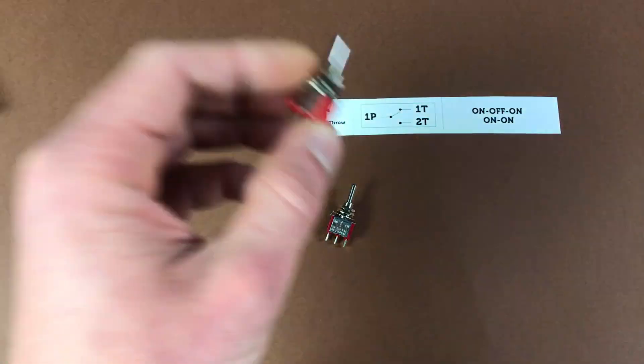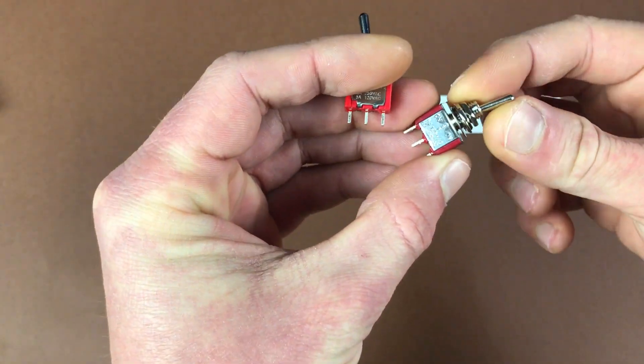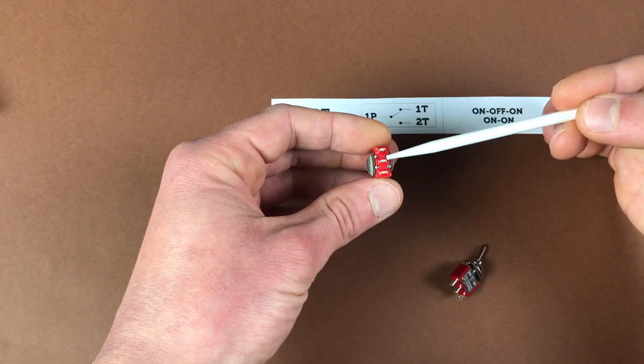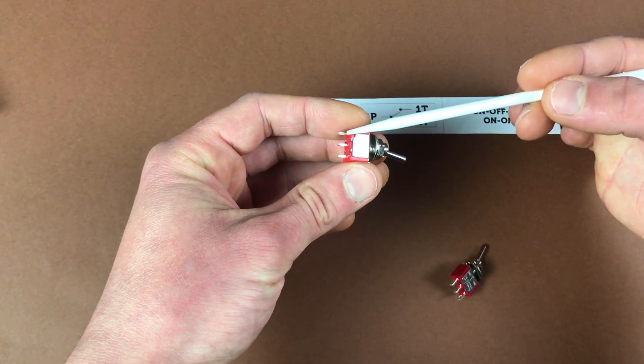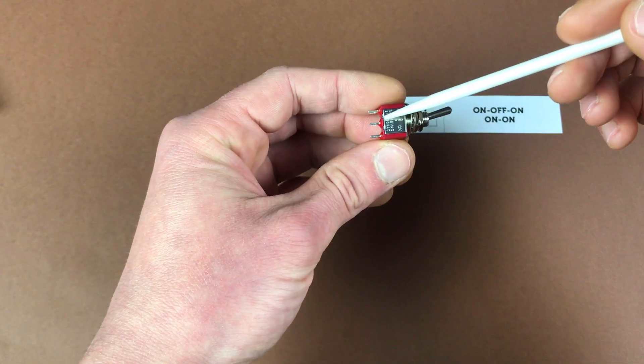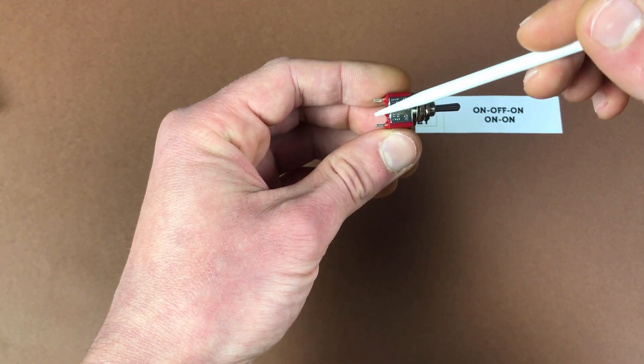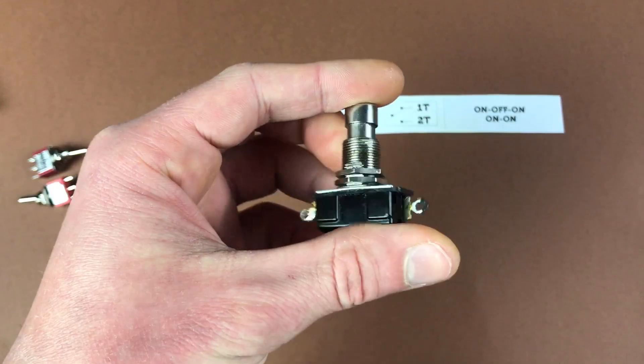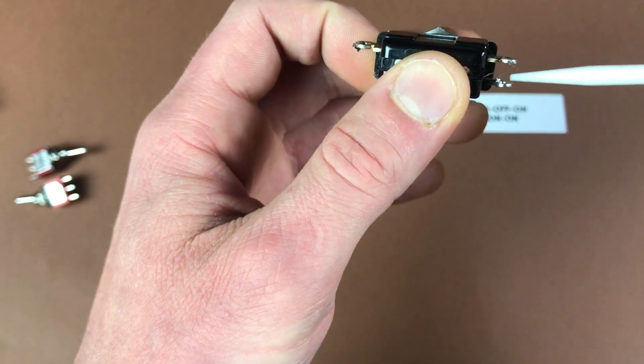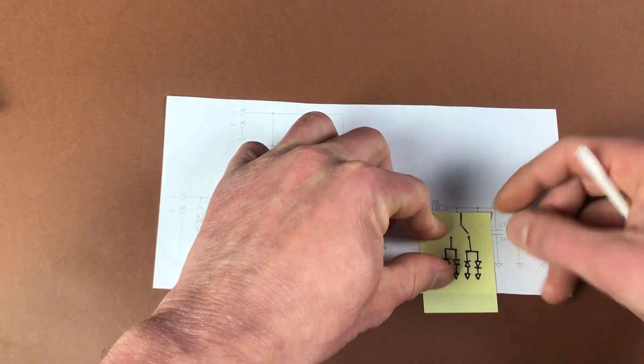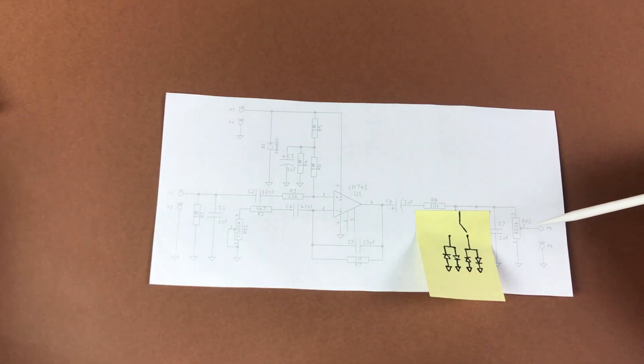Next one is single pole, double throw. So again we can control one circuit with it but it has two outputs. As you see I have two types of them here, on-on and on-off-on. Middle pin is common connection. In this position middle pin is connected with top one and in this with bottom one. Same here but we have an additional middle position and it's off. So middle pin is not connected with any pins then. Here you can see footswitch version of this switch. So this is common pin and we're switching between those top connections. So for example we can use it to swap between two different pairs of diodes. Or bypass them with off.